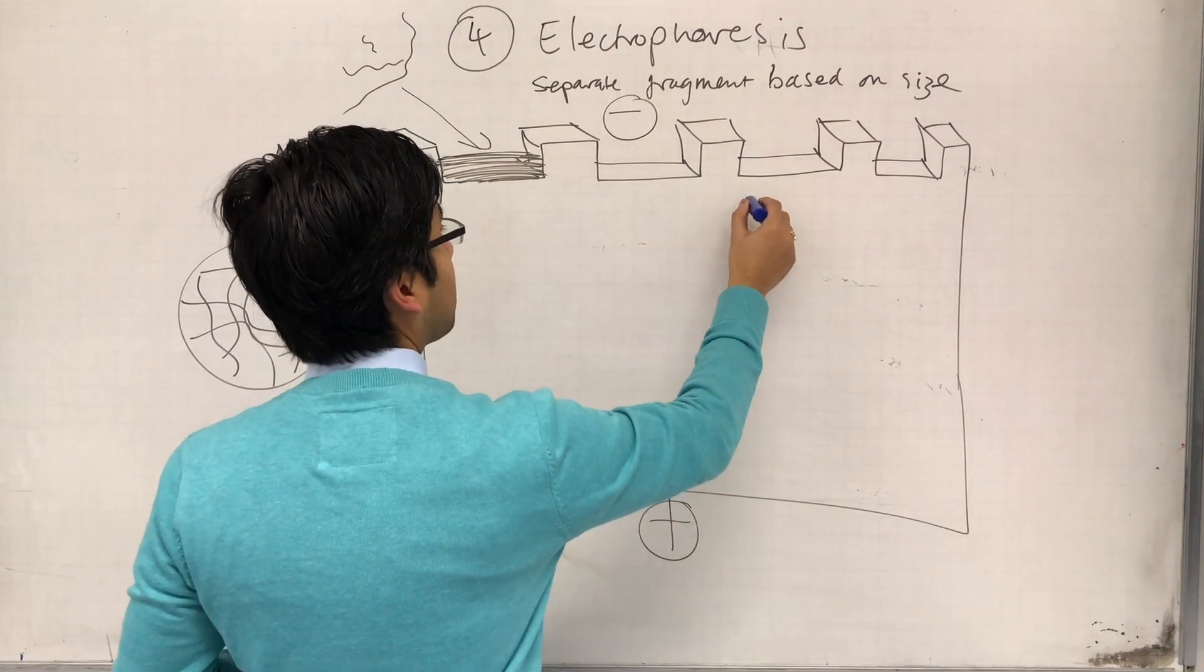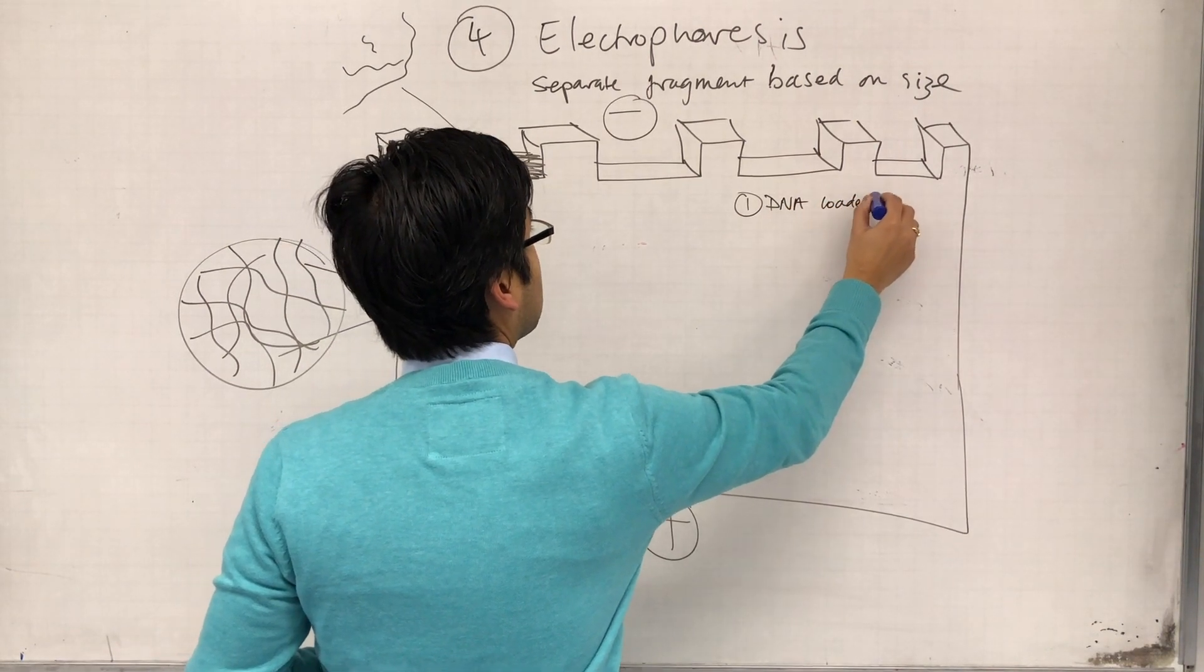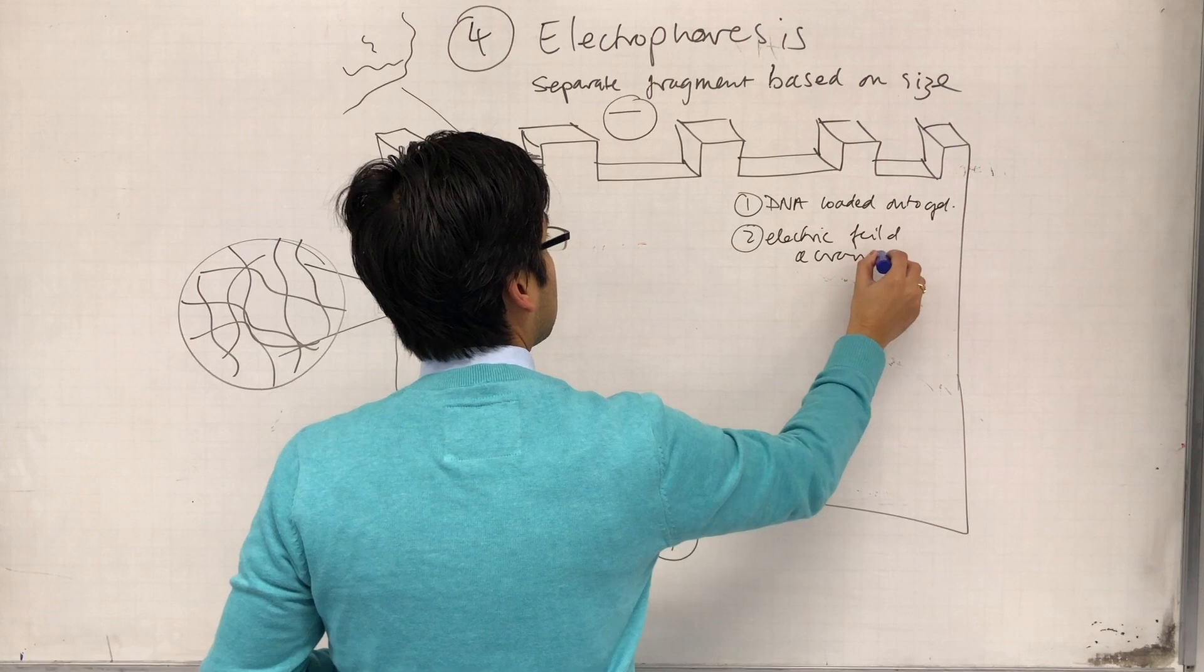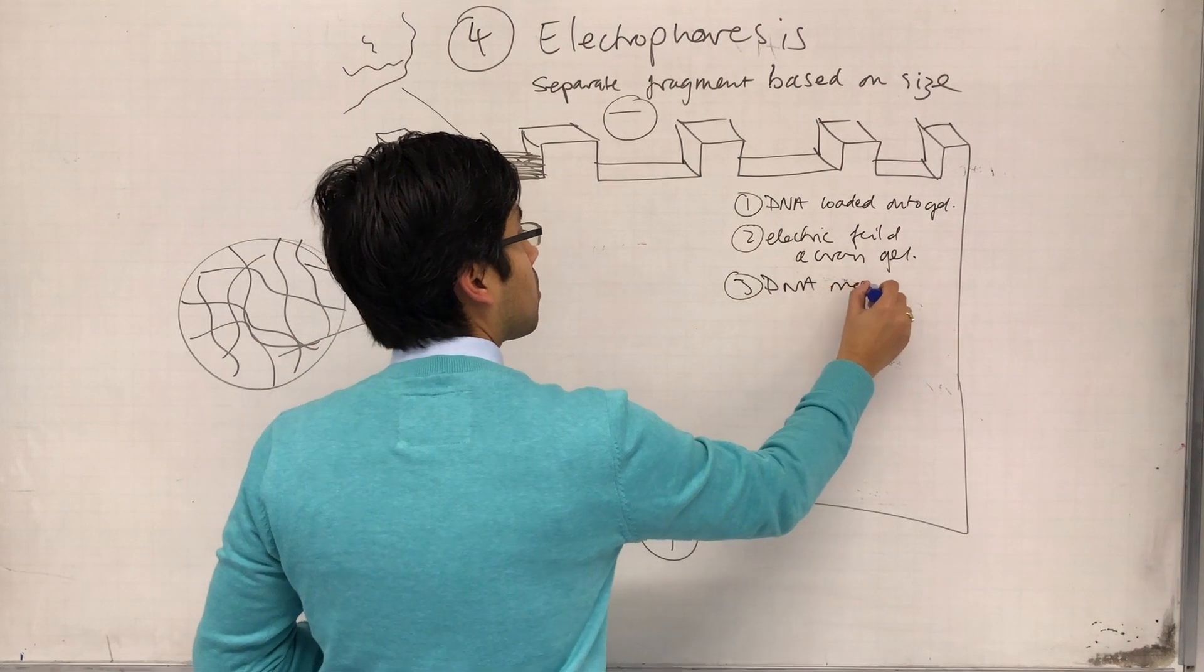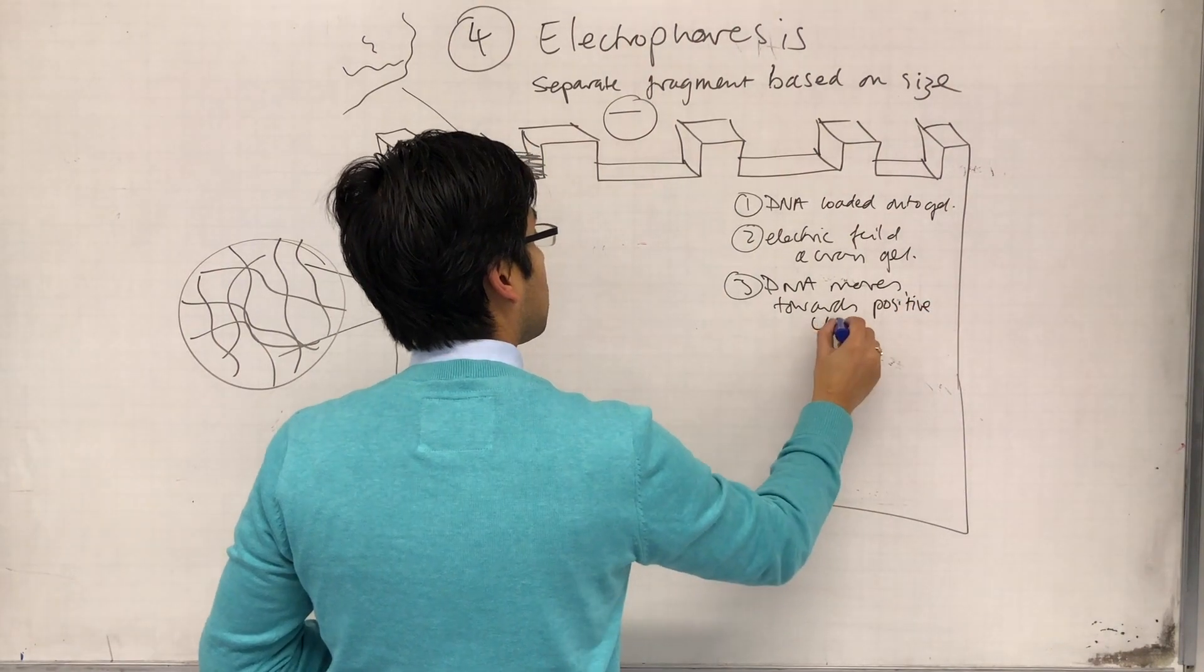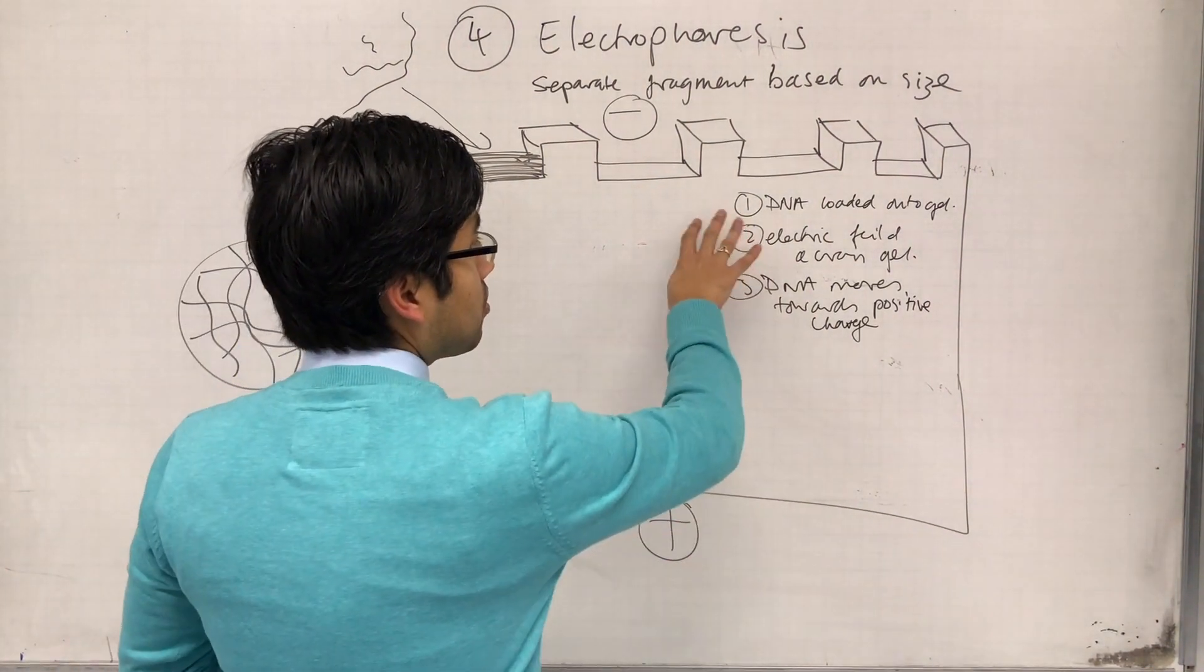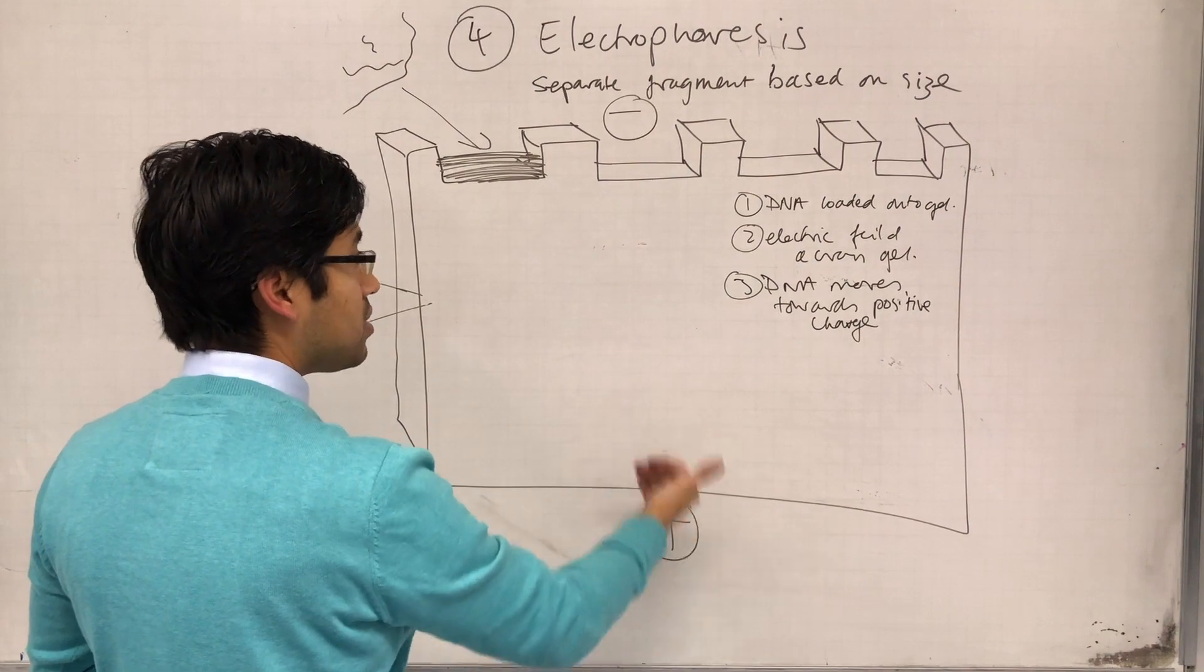Let's just put the key points down here. So DNA loaded onto gel, electric field across the gel, and three, because DNA is charged, DNA moves towards positive charge. It's relying on your knowledge of first year and DNA structure. So the DNA is loaded onto the gel, electric field is placed across the gel, the DNA moves towards the positive charge.